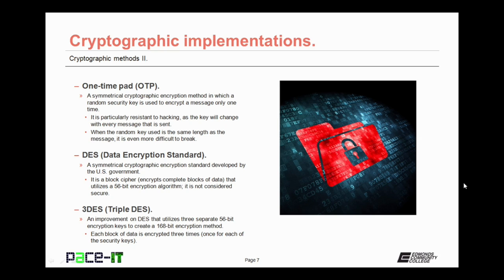Another cryptographic implementation is DES, Data Encryption Standard. It's a symmetrical cryptographic encryption standard developed by the U.S. government. It is a block cipher, encrypting complete blocks of data at a time, and it utilizes a 56-bit encryption algorithm. DES is not considered to be secure. Triple DES is an improvement on DES that utilizes three separate 56-bit encryption keys to create a 168-bit encryption method. Each block of data is encrypted three times, once for each of the security keys.